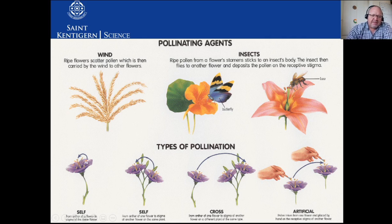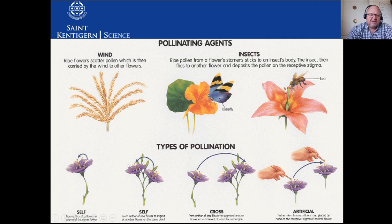With self-pollination on the same flower, you have the pollen ending up on the stigma of the same flower. Flowers have different ways of preventing this - some will have their pollen becoming ripe and released before the stigma is ready to receive, or the other way around. Then you have self-pollination on the same plant but not the same flower, so the pollen from one goes onto the stigma of the other - but it's still the same plant, so it's the same DNA.